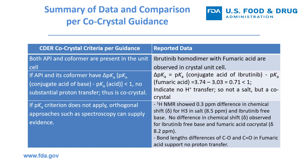In the Ibrutinib–fumaric acid case, delta pKa equals pKa of the conjugate acid of Ibrutinib base (3.74) minus pKa of fumaric acid (3.03), which equals 0.71 — less than one. This indicates no hydrogen transfer; it is not a salt but a co-crystal.